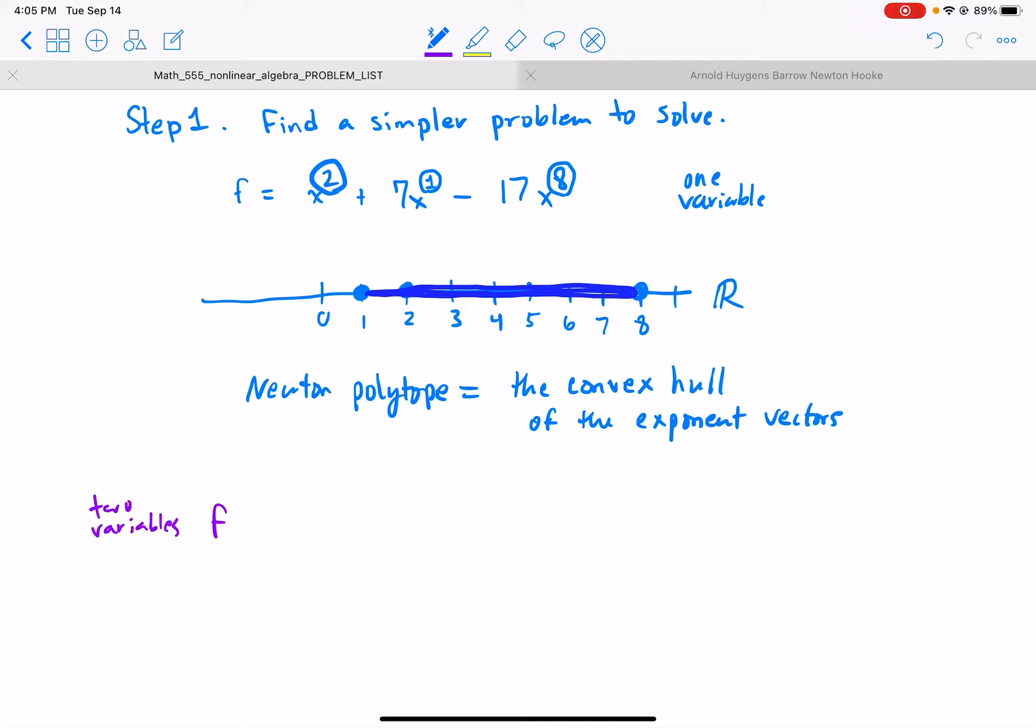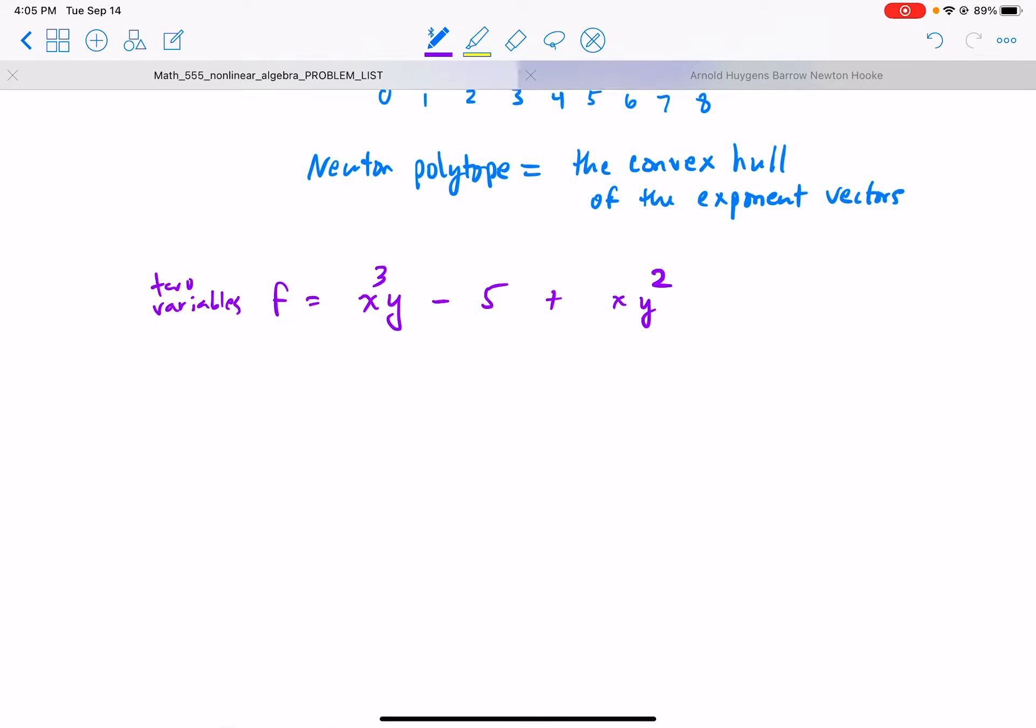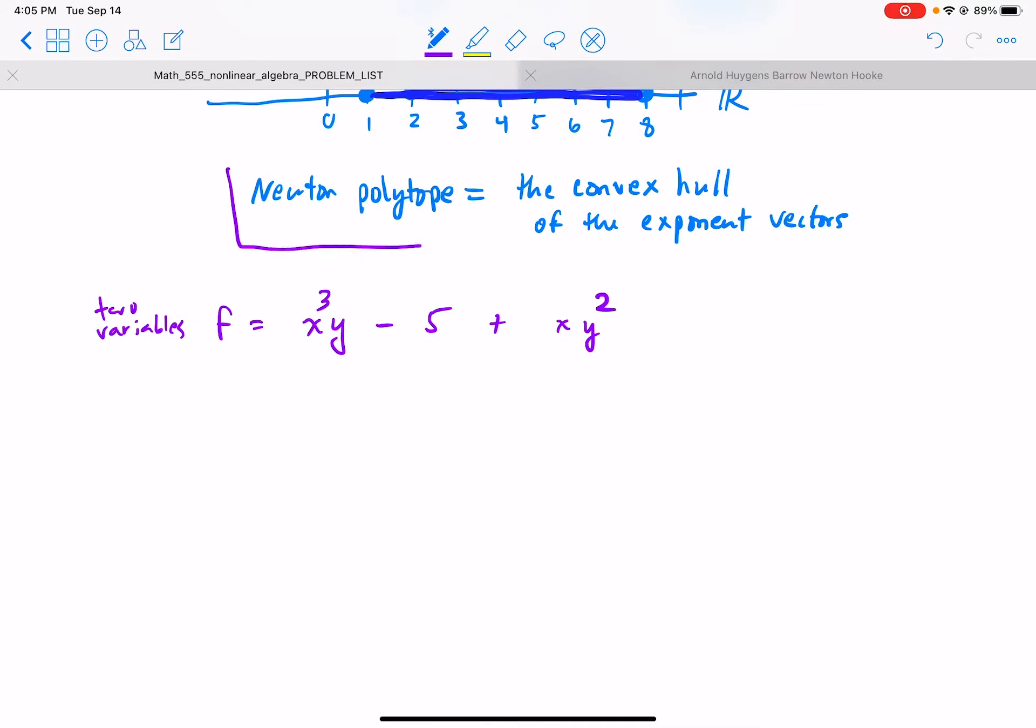Two variables. So let's say f is x to the third y minus five plus x y squared. The Newton polytope is the convex hull of the exponent vectors. This term has the exponent vector three comma one, this term has the exponent vector zero comma zero, and this term has the exponent vector one comma two.